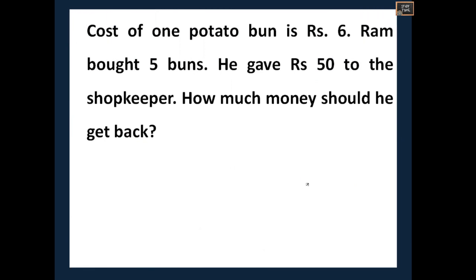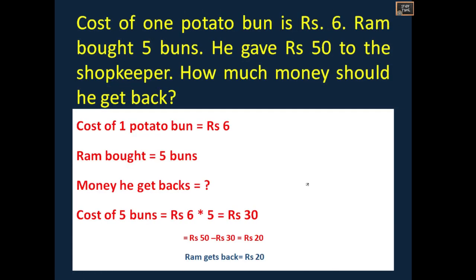Next: cost of one potato bun is rupees 6. Ram bought five buns and gave rupees 50 to the shopkeeper. How much money should he get back? Cost of five buns: 5 into 6 = rupees 30. He gave rupees 50, so Ram gets back rupees 20. This is the answer.